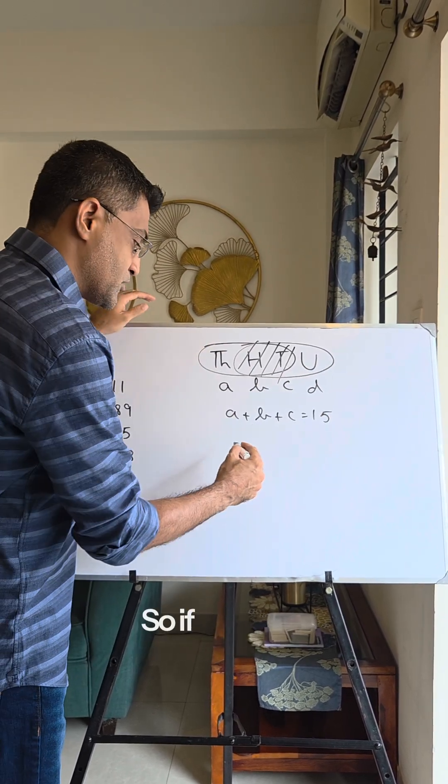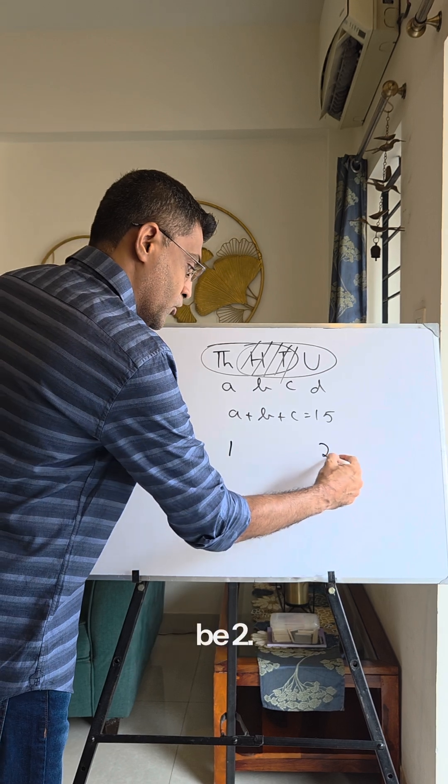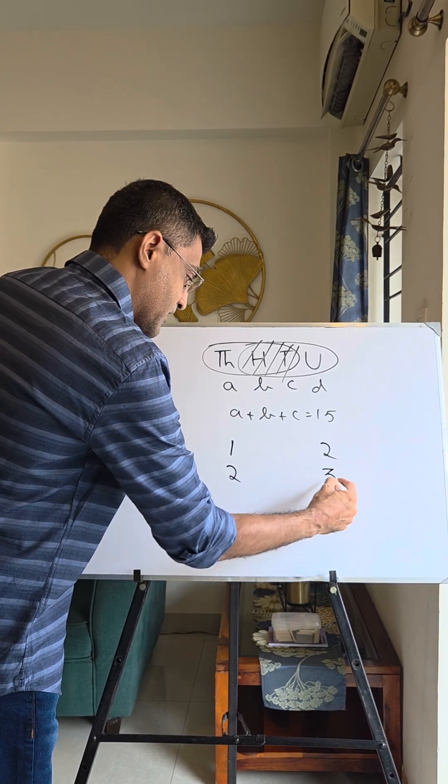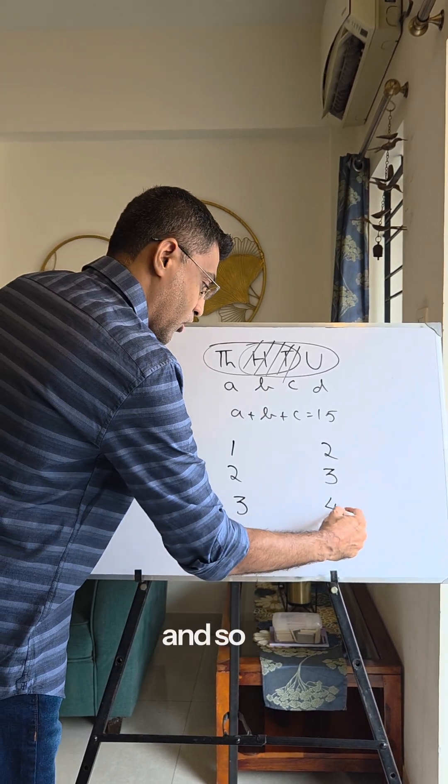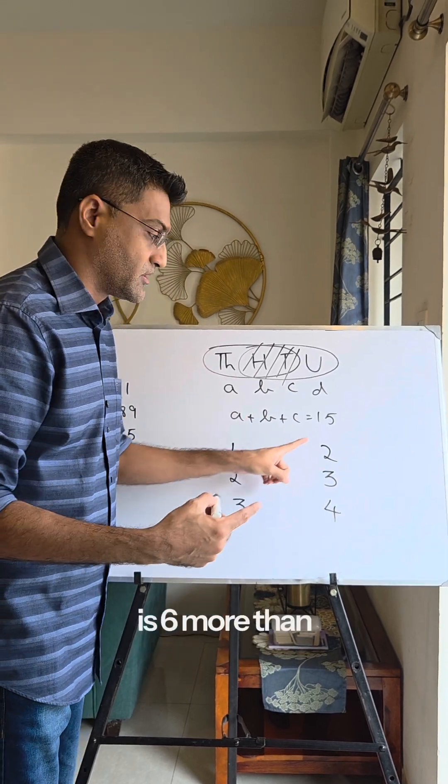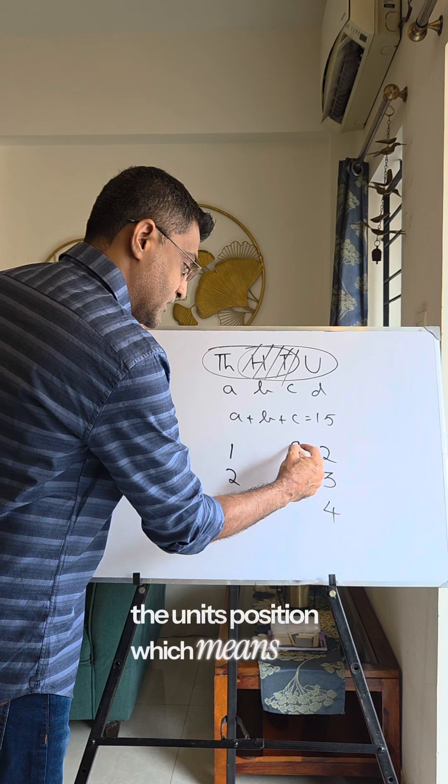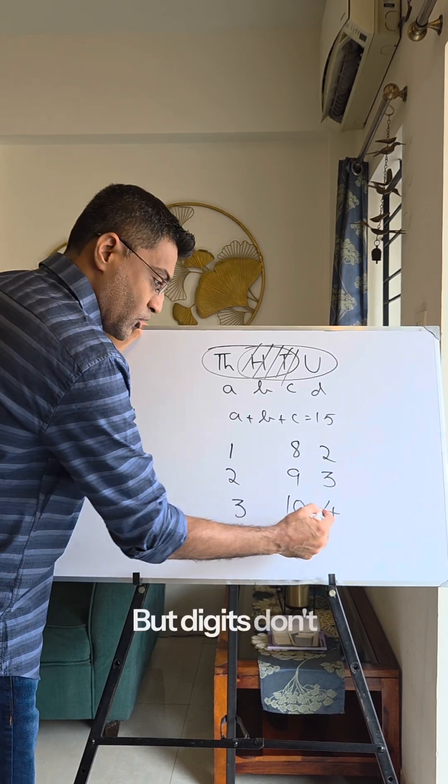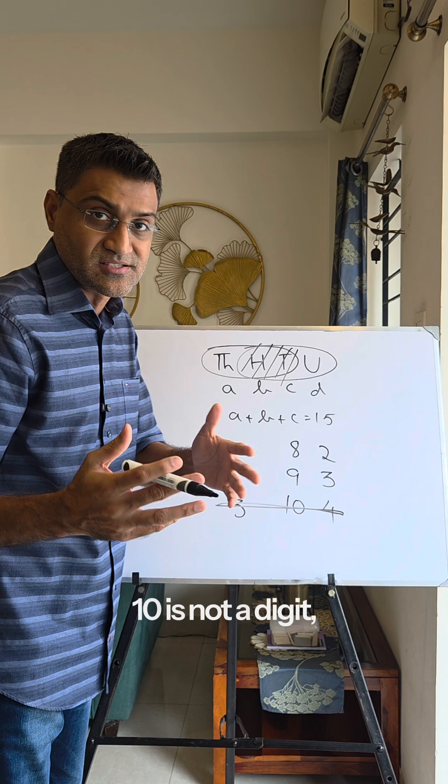If you start with the thousands digit being 1, then units would be 2. If thousands is 2, then units is 3; if 3, then 4, and so on. But also, the tens position is 6 more than the units position, which means tens could be 8, 9, or 10. But digits don't exist beyond 9—10 is not a digit, it's a number. So the only two possibilities remain.